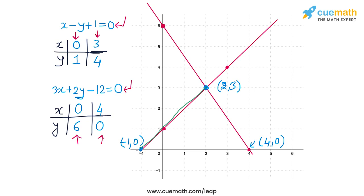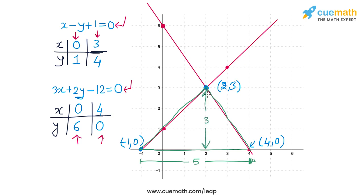So the two lines and the x-axis form a triangle with vertices at (2, 3), (−1, 0), and (4, 0). We just needed to find the coordinates of the vertices of this triangle — we don't need to find its area. The base of the triangle is five units long and the corresponding height is three units. This is the required triangle, and the triangular region to be shaded is the whole region that falls within these three vertices.